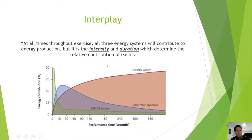Now these three systems interplay - they don't work independently of each other, they work together. The phrase we use is that at all times throughout exercise, all three energy systems will contribute to energy production, but it is the intensity and duration which determine the relative contribution of each. So this green one is that ATP-PC system - your 100 meter sprint stuff. We get energy very quickly and it's dominant for that 10 second period.